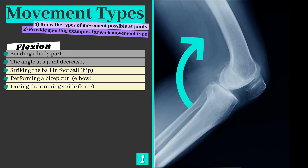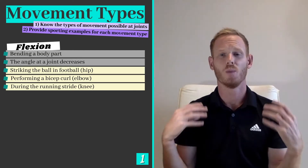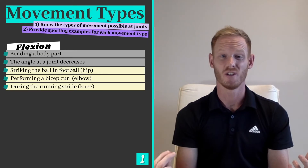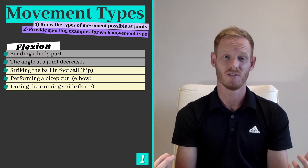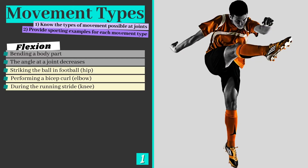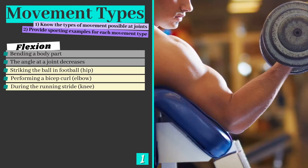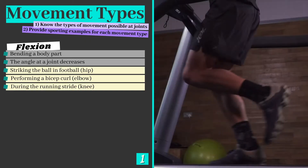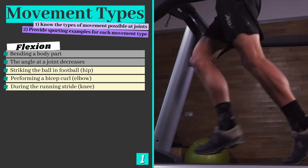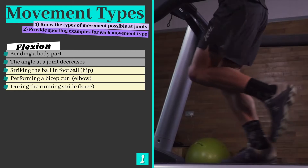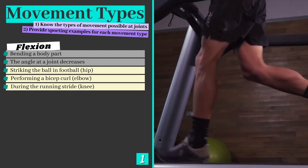Our first movement type is flexion, which simply means bending a body part or decreasing the angle at a joint. Ball and socket joints and hinge joints both allow flexion, and it can be seen at the hip joint when striking a ball in football, at the elbow during the upward phase of a bicep curl, and at the knee joint during the running stride directly after the push-off or propulsion phase.